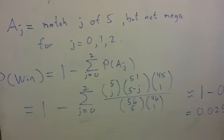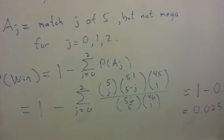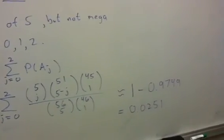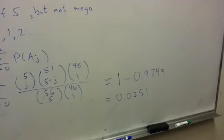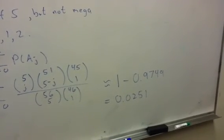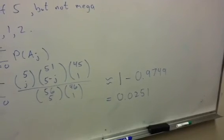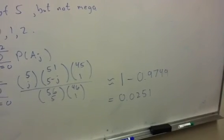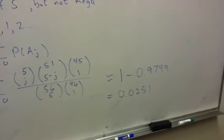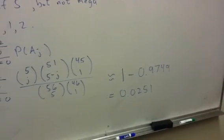Now, substituting all this into your favorite computing software, we end up getting that the probability of winning is 0.0251. And if you divide 1 by that number, that gives you an odds of about 39 to 1 of winning, which are the odds posted on the California website.